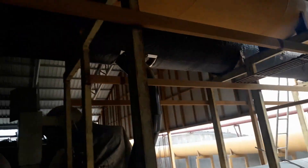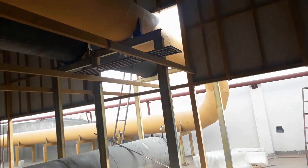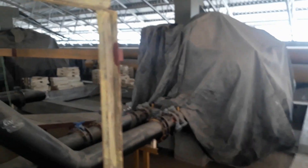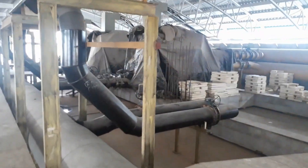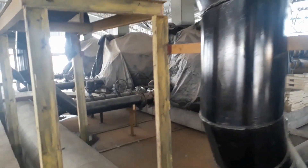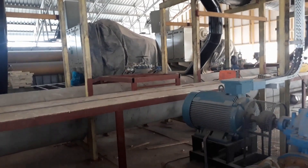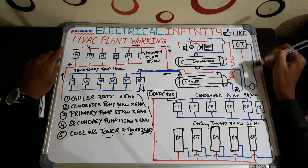This pump carries cool water from the output of the six condenser pumps and sends it to the condenser. We have used five condenser and chiller units — this is a compact unit containing five condensers, five chillers, and a compressor. This one is the condenser, this one is the chiller, and this one is the cooling tower.